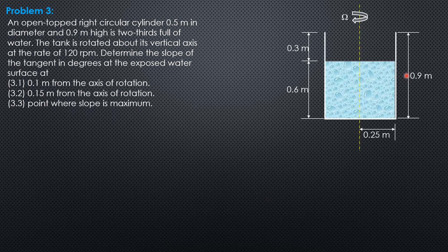So let's do the figure first. We have a height of 0.9, radius of 0.25. So these are the information. Two-thirds full, so that means this is 0.6 and this is 0.3.